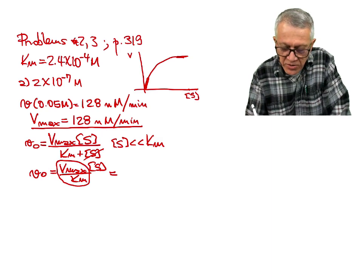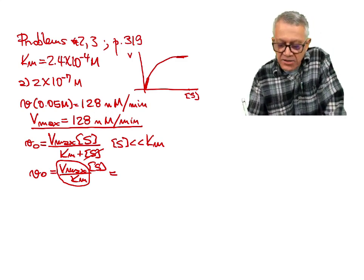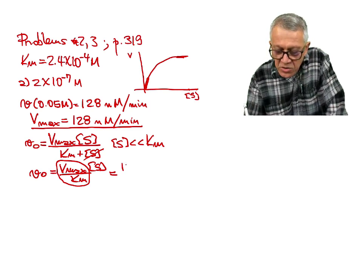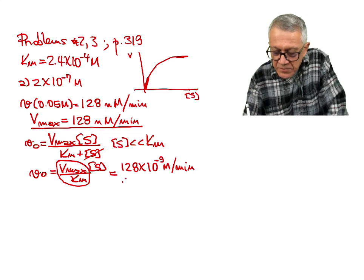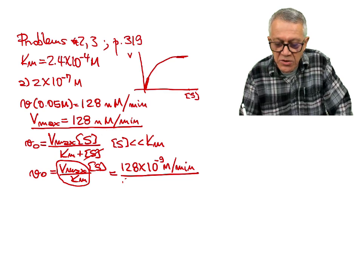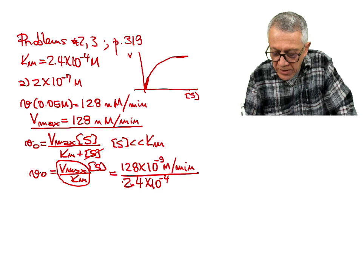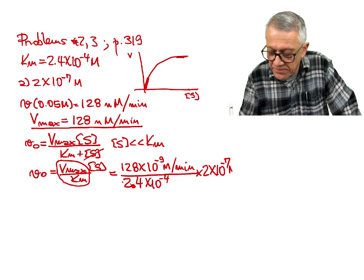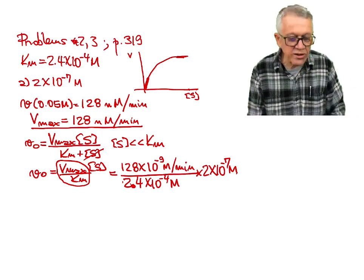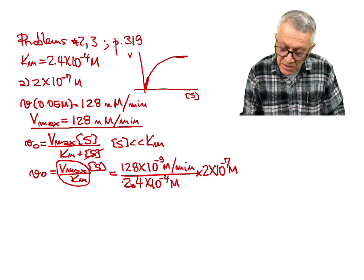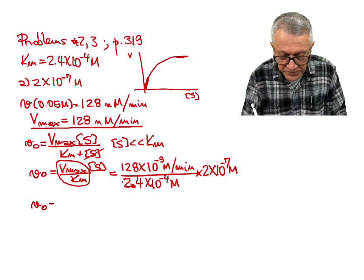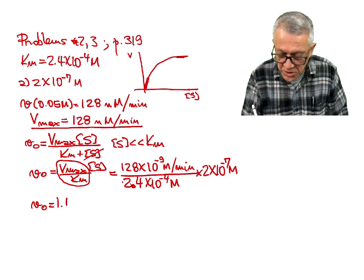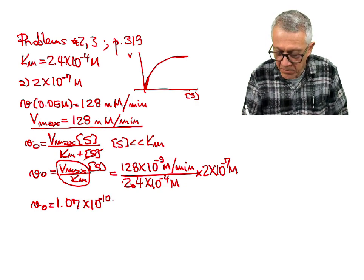This is a first-order reaction, and we can also express this as K times S, where K is the ratio between Vmax and Km. So let's calculate: Vmax equals 128 times 10 to the negative 9 molar per minute, divided by Km which is 2.4 times 10 to the minus 4, multiplied by the substrate concentration for part A, which is 2 times 10 to the power of negative 7 molar. That gives us V0 equals 1.07 times 10 to the minus 10 molar per minute.